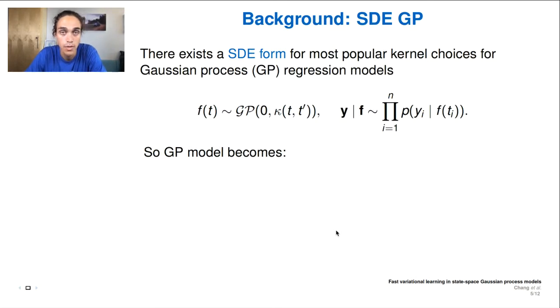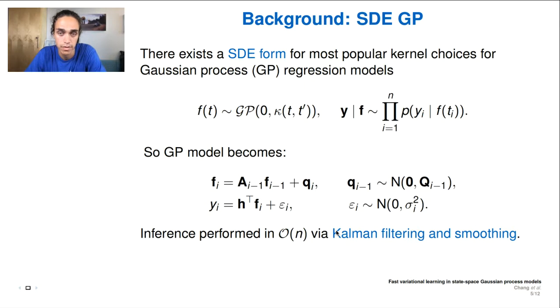At the top is the standard way one would write down a GP. So we have a function over time with a corresponding kernel and an observation model or likelihood on the right. For most popular kernel choices, we can rewrite the GP as a linear time invariant SDE equation. And then we can use a discrete-type model such as the state-space model to solve this